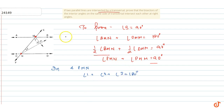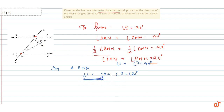We call angle PMN as angle 1 and angle PNM as angle 2. We have already shown that angle 1 plus angle 2 equals 90 degrees. Substituting into the triangle angle sum: 90 degrees plus angle 3 equals 180 degrees.